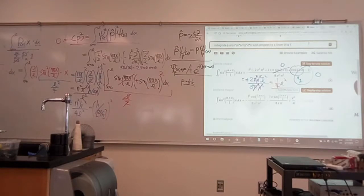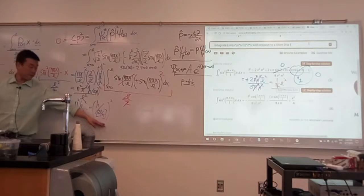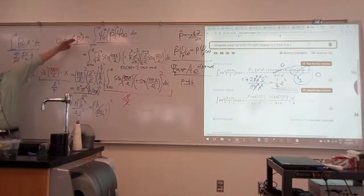I'm just rewriting it to remind you of the de Broglie relationship. Momentum is Planck's constant divided by wavelength. So that squared is the expectation value of momentum squared.